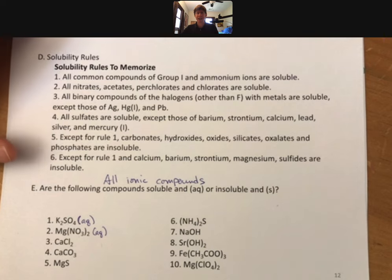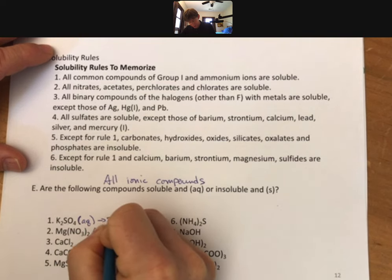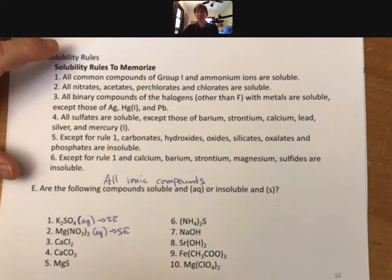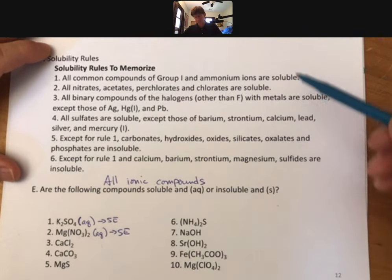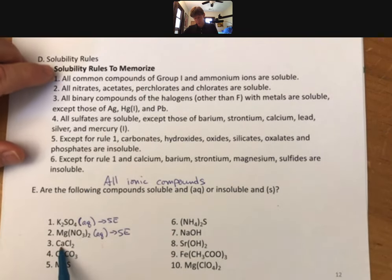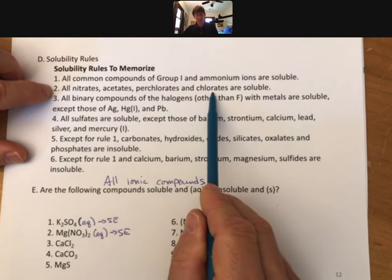And let me just say that too. So ionic compounds that do dissolve are strong electrolytes and means that they have these ions, just like we were talking about on the last slide, that allow things, this solution to conduct electricity. All right. So now let's go for rule number three. So there's no group one or ammonium. There's no nitrates, acetates, perchlorates, or chlorates.